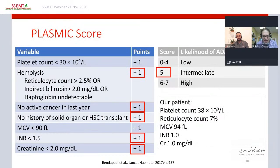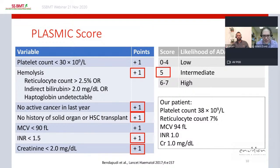Applying the PLASMIC score to our patient: platelet count of 38,000 does not earn a point; elevated reticulocyte count and undetectable haptoglobin earn a hemolysis point; no history of cancer or transplant earns points for those criteria; INR less than 1.5 and creatinine less than 2 earn additional points. Her total score is 5, corresponding to intermediate likelihood of severe ADAMTS13 deficiency.